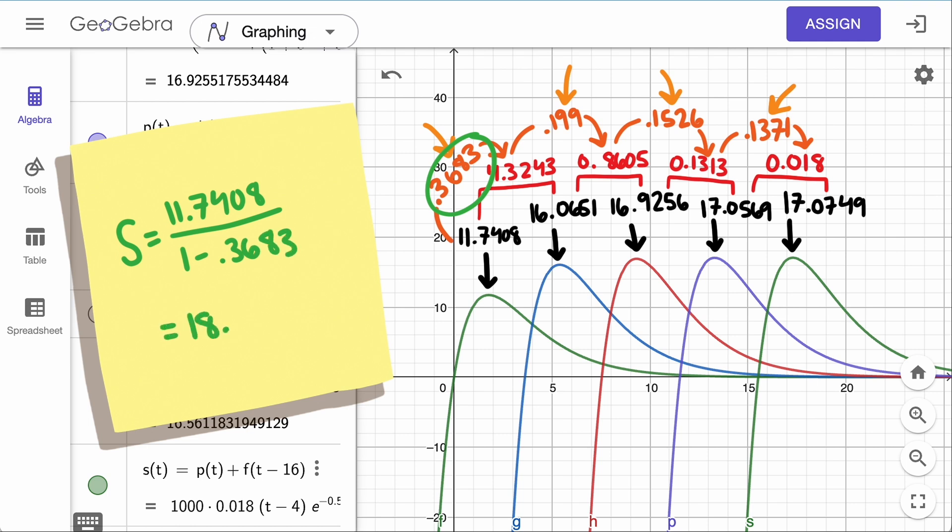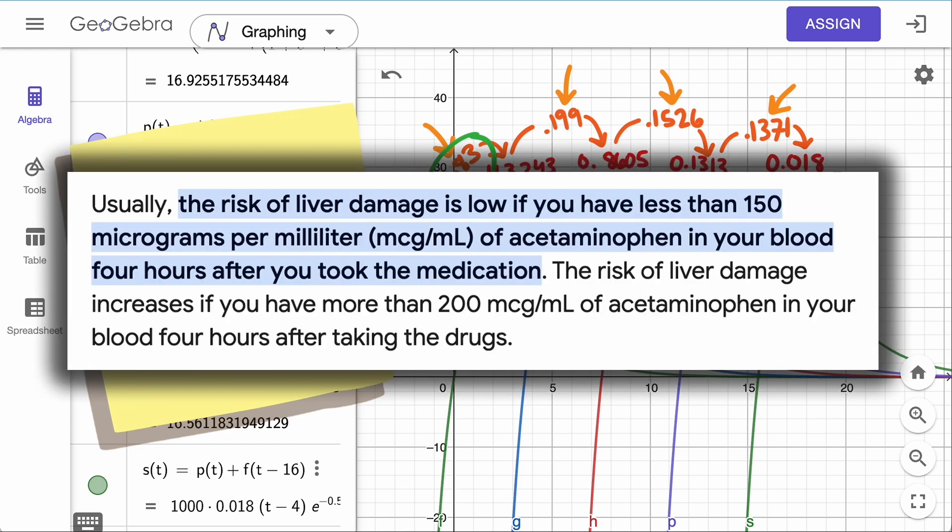This gives us a result less than 19, which is still less than the therapeutic levels, not even close to toxic levels, of 150 micrograms per milliliter.